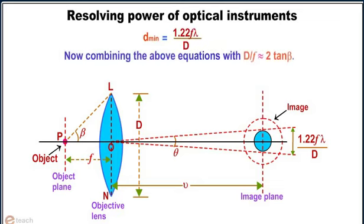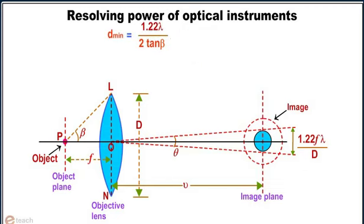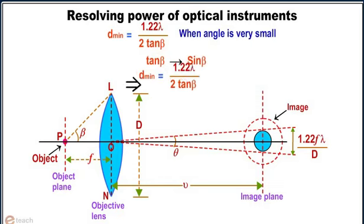Now combining the above equations with d by f equals 2 tan beta, we have d minimum equals 1.22 f lambda by 2 beta. d minimum equals 1.22 lambda by 2 tan beta. When angle is very small, tan beta tends to sin beta. This implies d minimum equals 1.22 lambda by 2 sin beta.